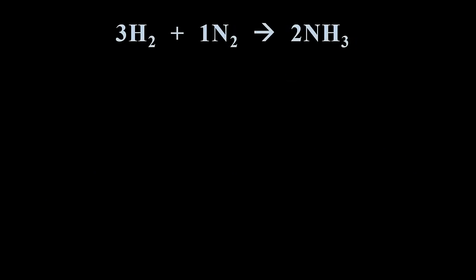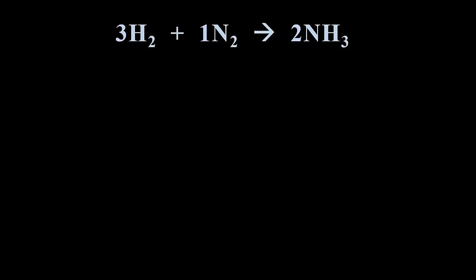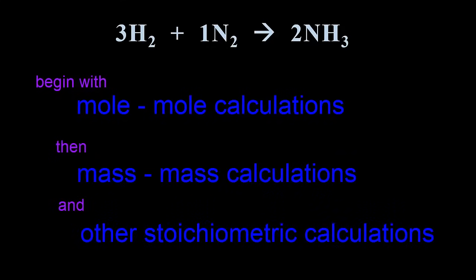Let's see how that ratio can work for us stoichiometrically — in other words, how can we use that ratio to relate an amount of one substance in a reaction to an amount of any other substance in the same reaction? Keep in mind that the mathematical relationship given by the coefficient ratios holds constant no matter how much of the substances are being reacted. In the rest of the video we will look at mole-mole calculations, mass-mass calculations, and other stoichiometric calculations.